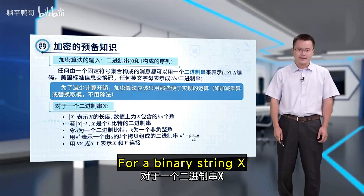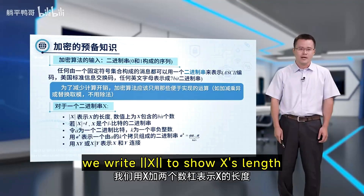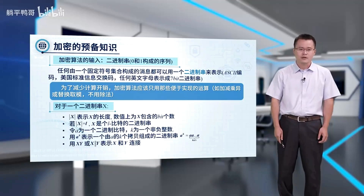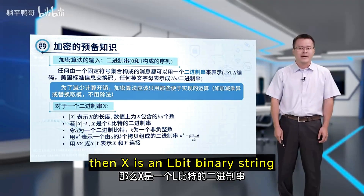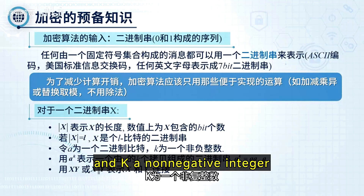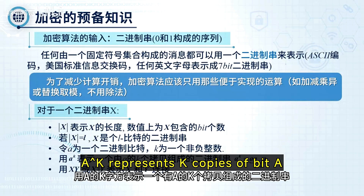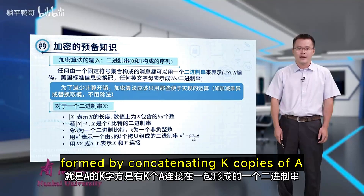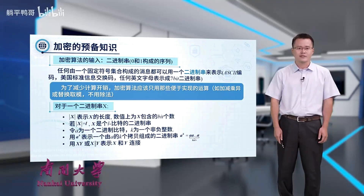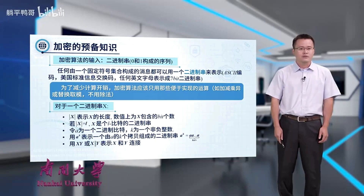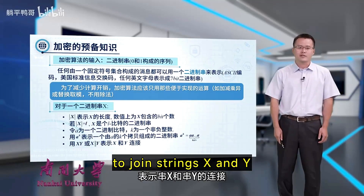For a binary string x, we write |x| to show x's length, which counts the number of bits in x. Let x have length n; then x is an n-bit binary string. Given a bit a and a non-negative integer k, a^k represents k copies of bit a, formed by concatenating k copies of a. We denote concatenation as x||y to join strings x and y.